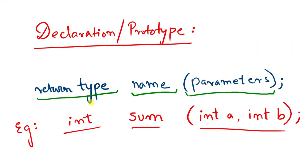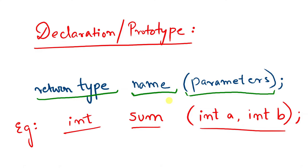Step by step: first, declaration — how does the prototype of a function look. We first write the return type of the function, that means what type of value we can expect from it. Here we have taken integer as the return type. Then comes the name of the function. It is always advisable to name your function according to the task it is going to do. For example, if you name it 'sum' but inside you do multiplication, that is a misleading name. Try to give relevant names.